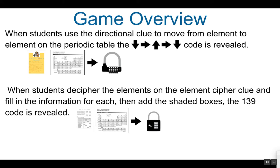When students decipher the elements on the element cipher clue and fill in the corresponding information for each element, the page tells them to add the shaded boxes together. When they find the sum of the shaded boxes, the code 139 is revealed for the 3-digit multi-lock.